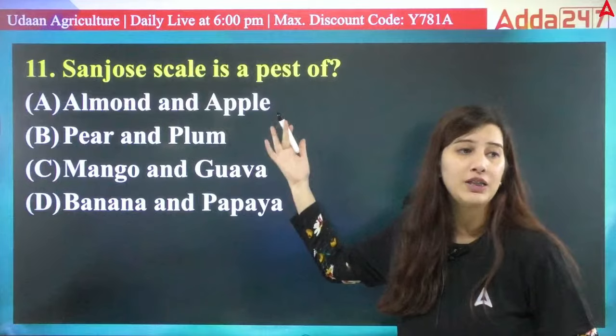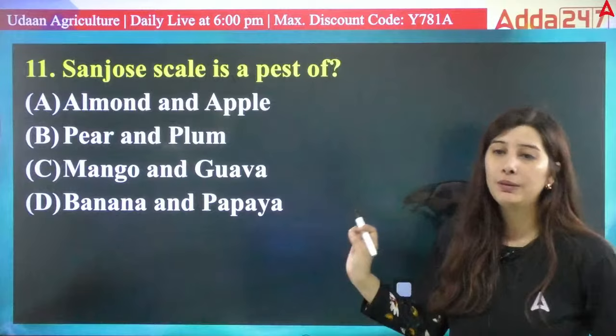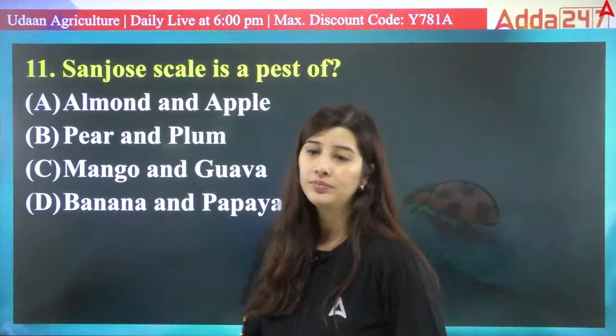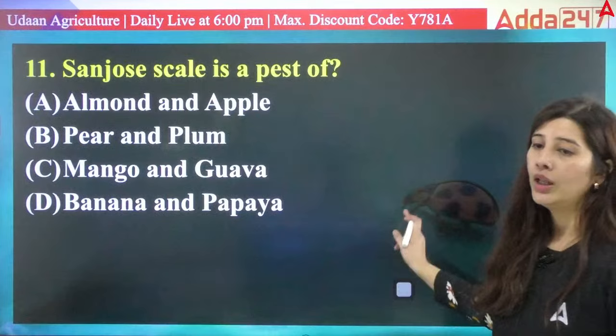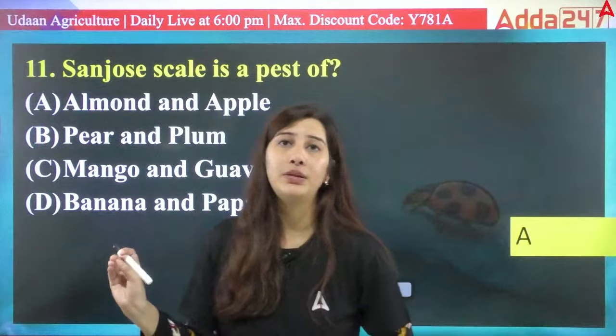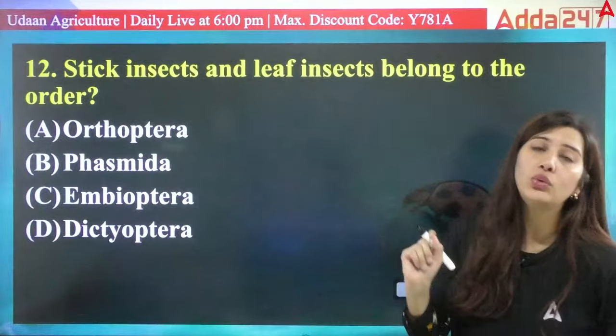San Jose's scale is a major pest of — options: almond and apple, pear and plum, mango and guava, or banana and papaya. The correct answer is A — almond and apple, basically apple is the primary host of San Jose's scale.